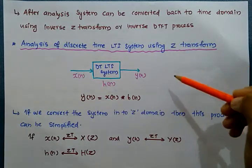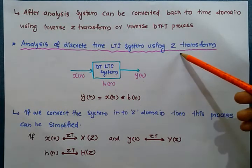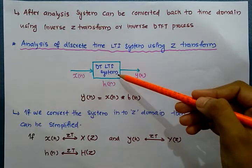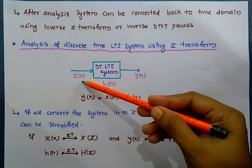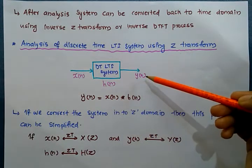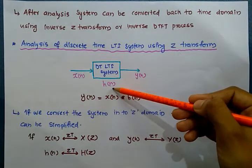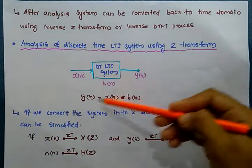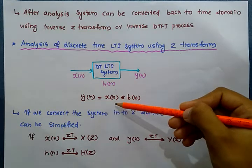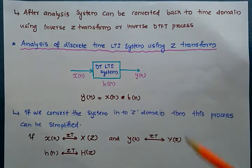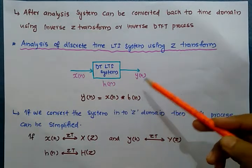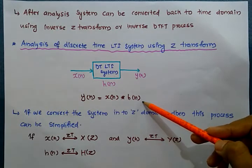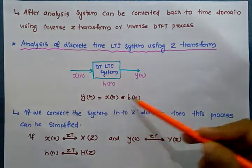The first topic is analysis of a discrete time LTI system using Z-transform. Consider a discrete time LTI system where x is the input signal, y is the output signal, and h is the impulse response. We know that the output signal is given by y equal to x convolved with h. In the time domain, finding the output requires a difficult convolution process.